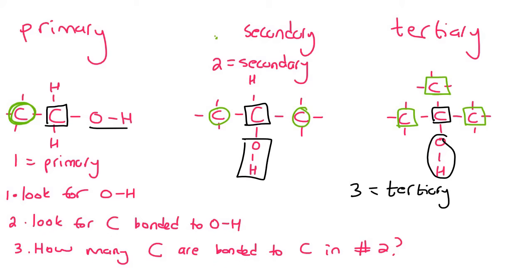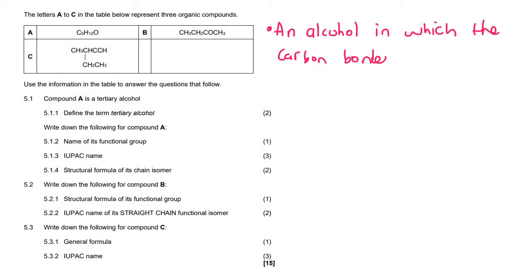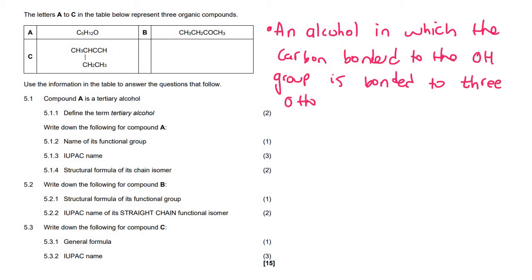So I hope that clears that up for you. A tertiary alcohol, if we want to define it, is an alcohol in which the carbon bonded to the OH group — you can call it a hydroxyl group as well — is bonded to three other carbons.